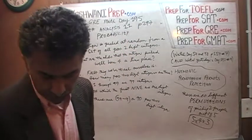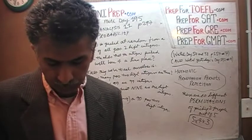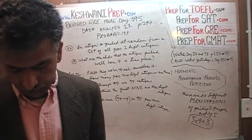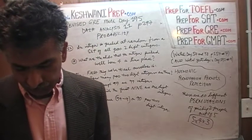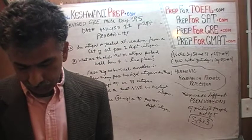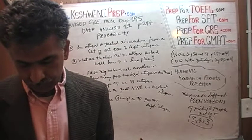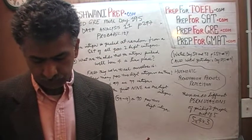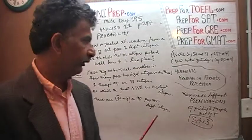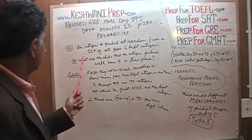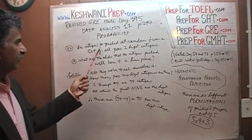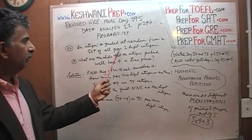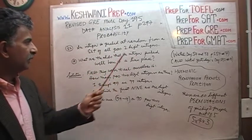Let's take a look at it. Turn to page 297 and read problem number 11. It says: if an integer is randomly selected from all positive two-digit integers, what is the probability that the integer chosen has certain characteristics? An integer is picked at random from a set of all positive two-digit integers.